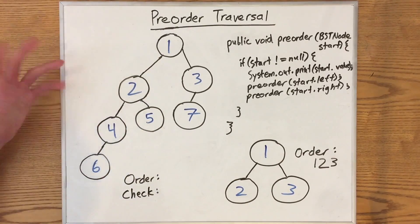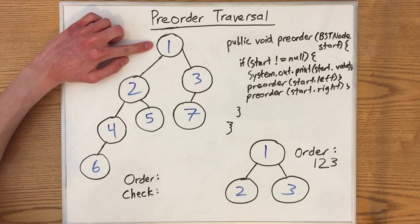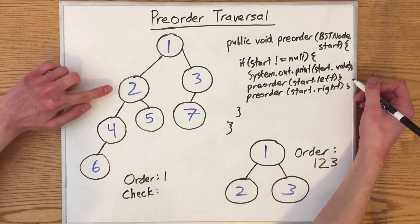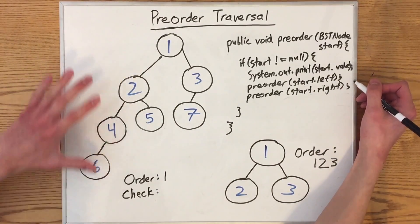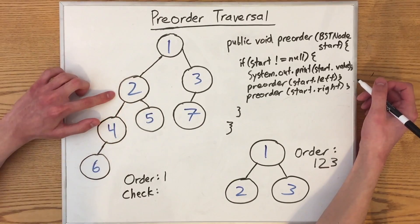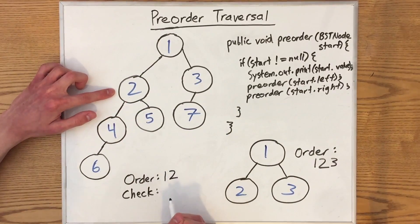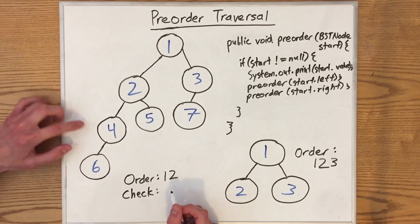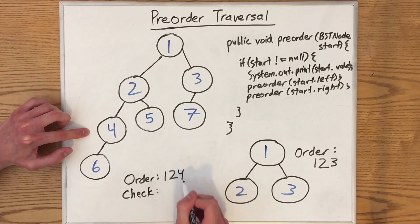Let's check it out on this tree and see if it works out. So the first thing that we do, we pass this in as our root node, so we print out its value. Then we call pre-order recursively on its left subtree, so we now treat this as an entire tree. We print out its root value, which is 2, and we call pre-order recursively on its left subtree. So we treat this now as its own tree and print out its value.